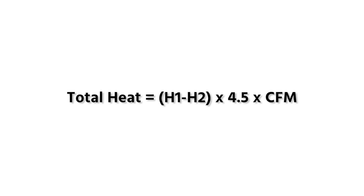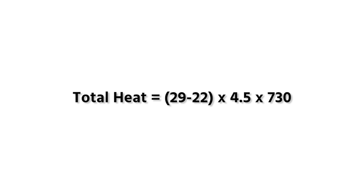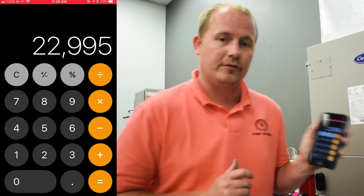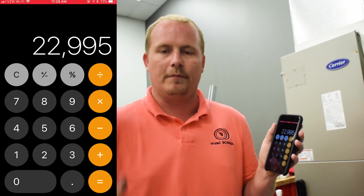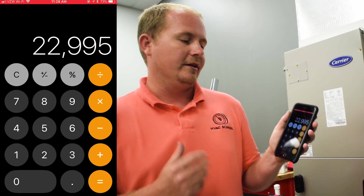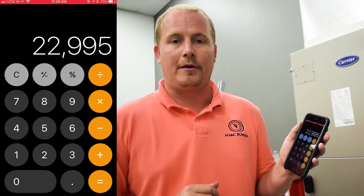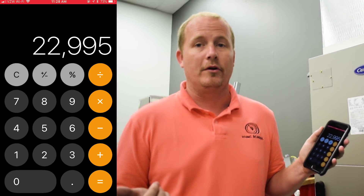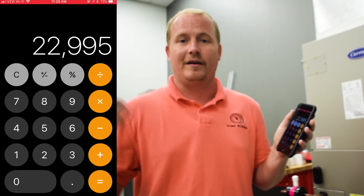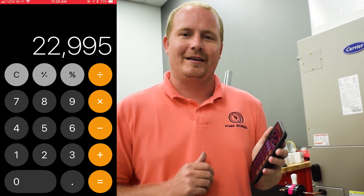Total heat equals H1 minus H2 — that's your split, which we know is 7 — times 4.5 times CFM. Because H1 is 29 and H2 is 22, there's a 7 BTU split. 7 times 4.5 is 31.5, times the CFM of 730. So the total BTUs this piece of equipment is absorbing from the air right now is 22,995 BTUs per hour. All you have to remember is: enthalpy split times 4.5 times CFM. I'm Brian with the HVAC School podcast. Thanks for watching.